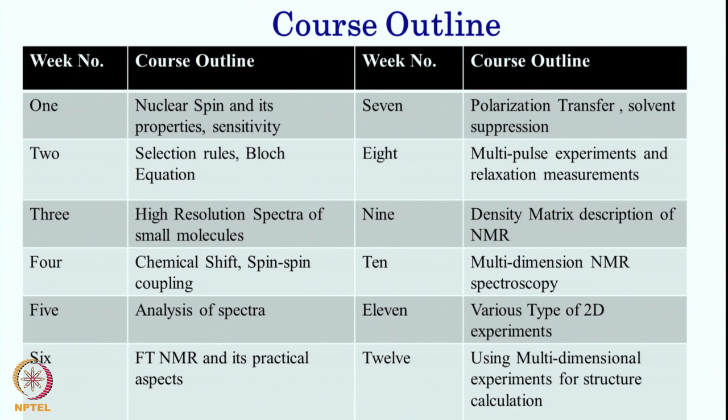This course is for 12 weeks. We will start with basic concepts of nuclear spins, their properties, and sensitivity. Then we move forward to explain selection rules and the Bloch equation. In the third week we will go to high-resolution spectra of small molecules. Then we deal with chemical shift, spin coupling, and give many examples to analyze a spectrum. Then we move to Fourier transform NMR and its practical aspects.